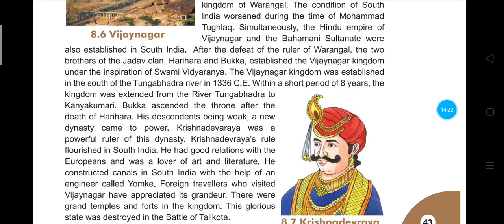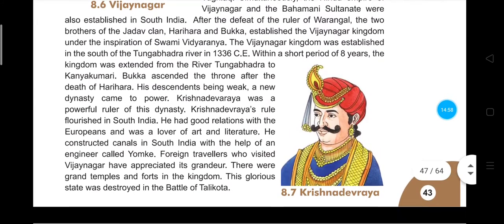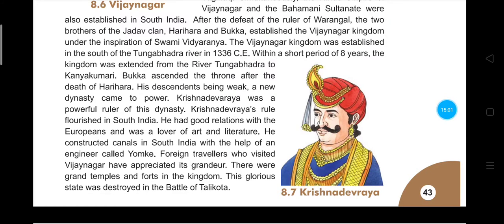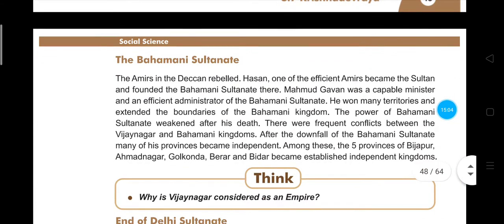Krishnadev Rai promoted art and literature. He constructed canals in south India with the help of an engineer called Yomke, providing proper irrigation. Foreign travelers who visited Vijayanagara appreciated its grandeur — there were grand temples and forts in the kingdom. However, this glorious state was ultimately destroyed in the battle of Talikota.